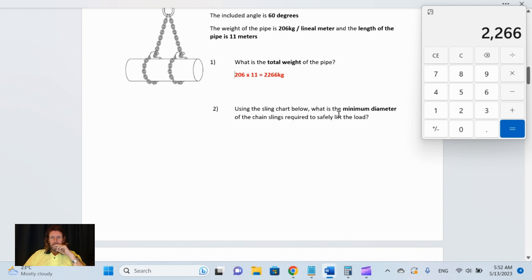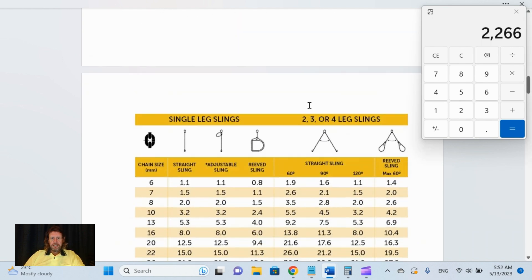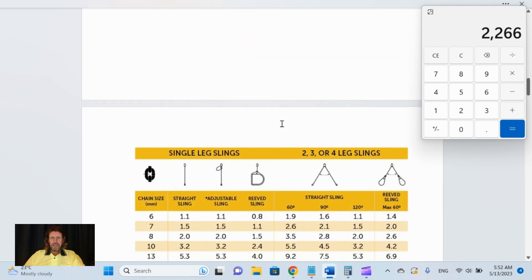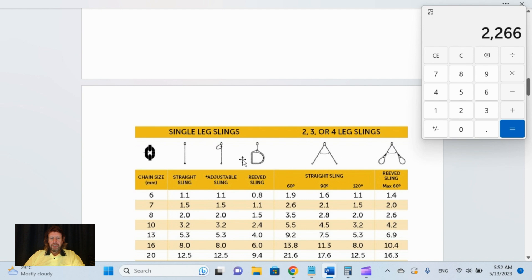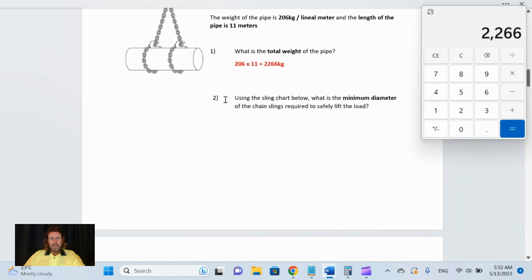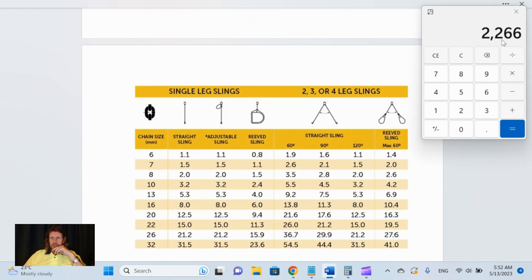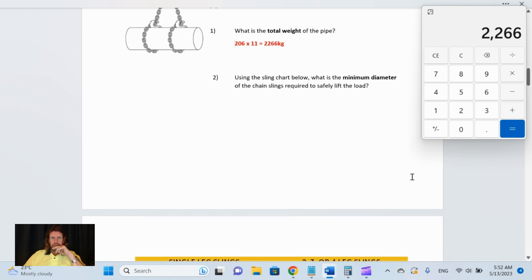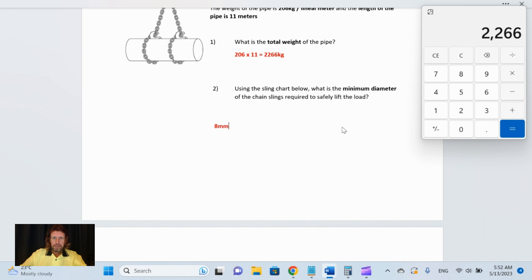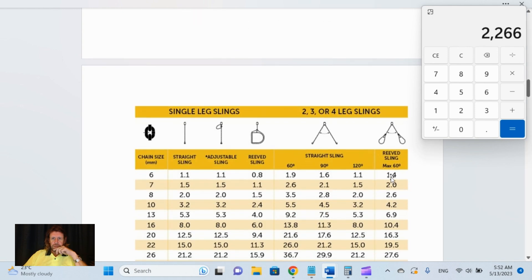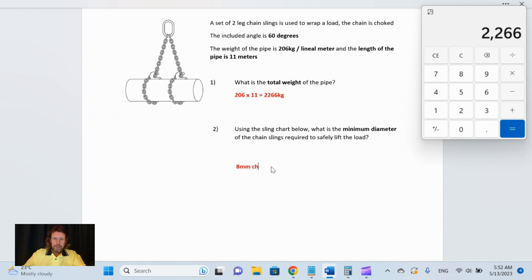Using the sling chart below, what is the minimum diameter of the chain slings required to safely lift the load? That's 2.26 tons, and it is in the choking configuration. Let's go down here where the choke is—that's the only one on this side here. This is where people make a few mistakes. 2.26 tons is above 2 tonne and below 2.6. What is the minimum diameter size rope that we require? Eight millimeters. Between 2 and 2.6, we go up to the larger chain size, which is eight millimeter chain.